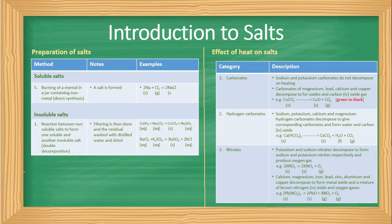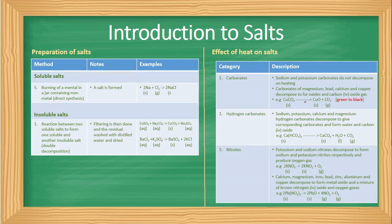Now let us look at the effect of heat on salts. For carbonates: sodium and potassium carbonates do not decompose on heating. The carbonates of magnesium, lead, calcium, and copper decompose to form the metal oxide and carbon dioxide gas — for example, copper carbonate decomposes to copper oxide and carbon dioxide. For hydrogen carbonates, sodium, potassium, calcium, and magnesium hydrogen carbonates decompose to give the corresponding carbonate, water, and carbon dioxide — for example, calcium hydrogen carbonate decomposes to calcium carbonate, water, and carbon dioxide.